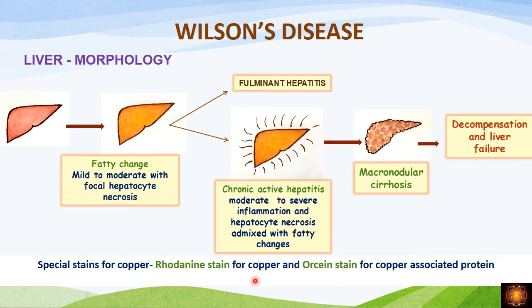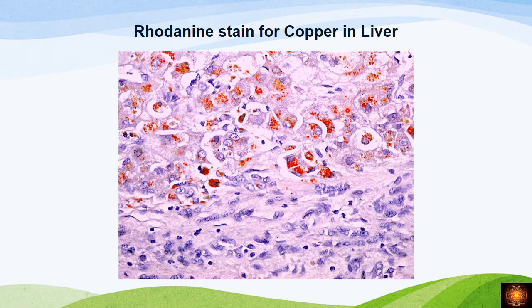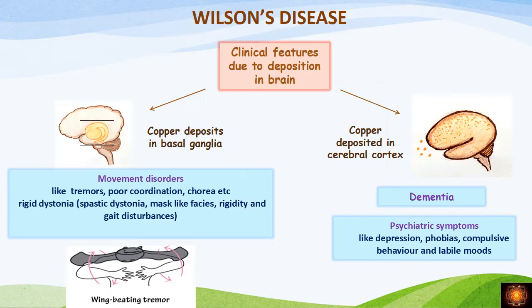To demonstrate copper in hepatocytes we use special stains like rhodanine stain and orcein stain, which stain for copper-associated protein. This gross photograph of the liver shows macronodular cirrhosis — macronodular means nodule size is more than 3 mm (less than 3 mm is micronodular). Wilson's disease typically shows macronodular cirrhosis. In the rhodanine stain, the orangish-brown pigment seen in the cytoplasm is copper stained by the rhodanine stain.